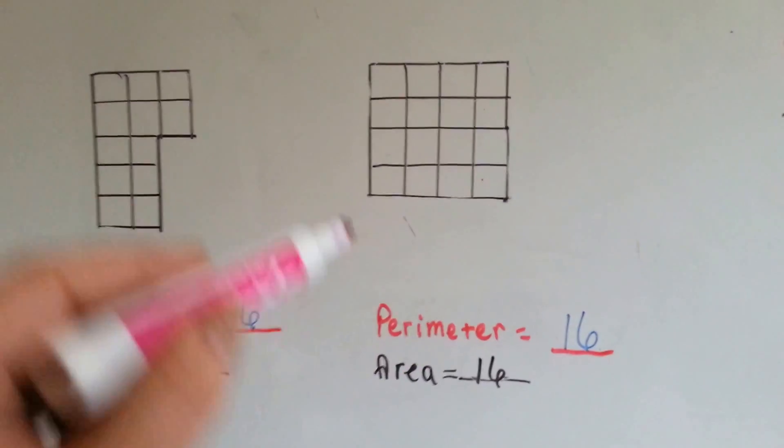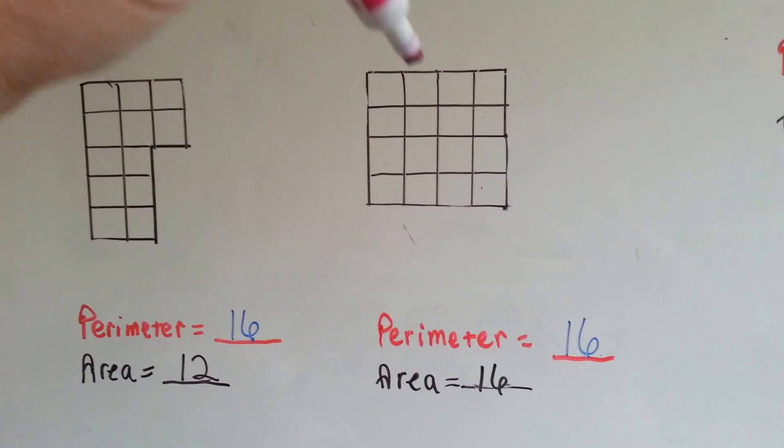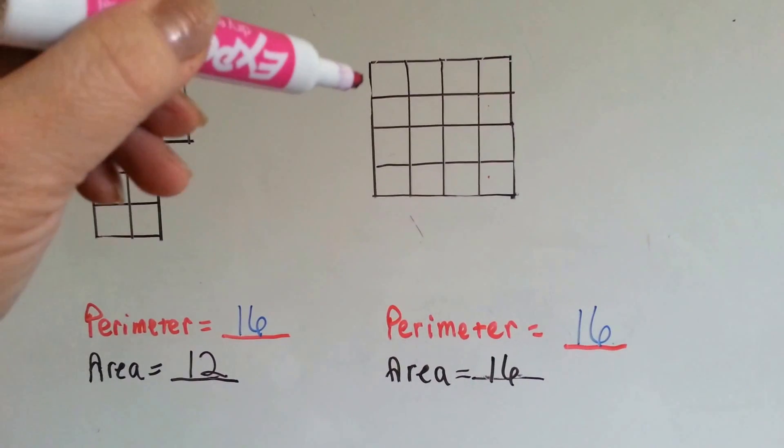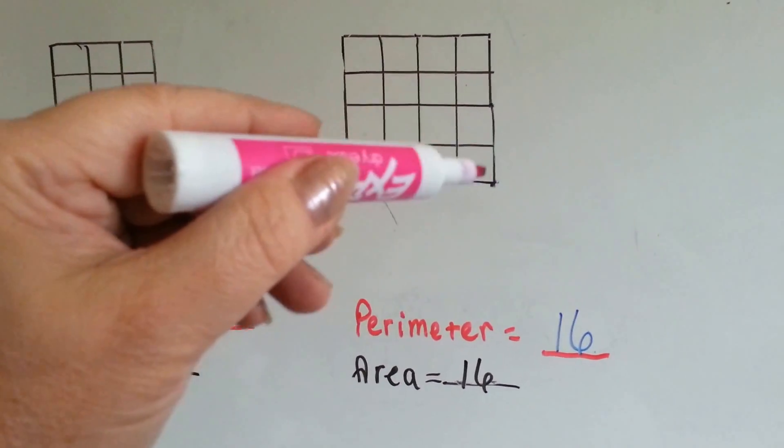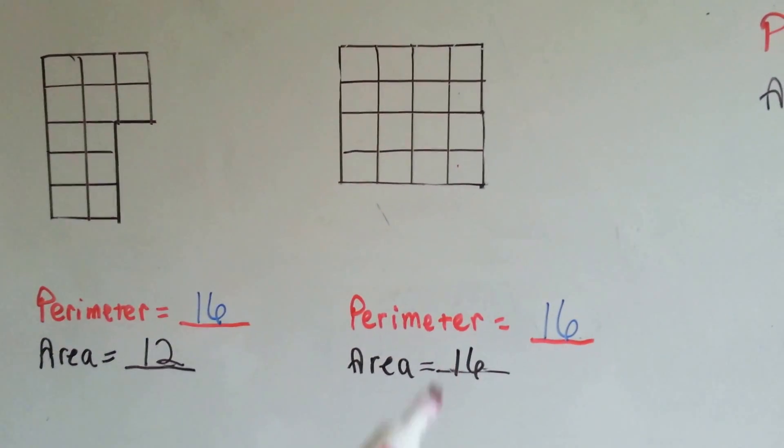Now let's look at the perimeter on this one. We've got 1, 2, 3, 4, 5, 6, 7, 8, 9, 10, 11, 12, 13, 14, 15, 16 line units around the outside.